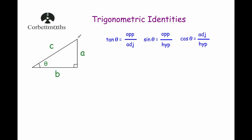To begin with, I've drawn a right angle triangle. I've marked in this angle as θ and I've labelled the sides a, b and c. Because it's a right angle triangle, the two shorter sides are a and b, and the larger side c is the hypotenuse. I've also listed the trigonometric ratios: tan θ is opposite over adjacent, sin θ is opposite over hypotenuse, and cos θ is equal to adjacent over hypotenuse.